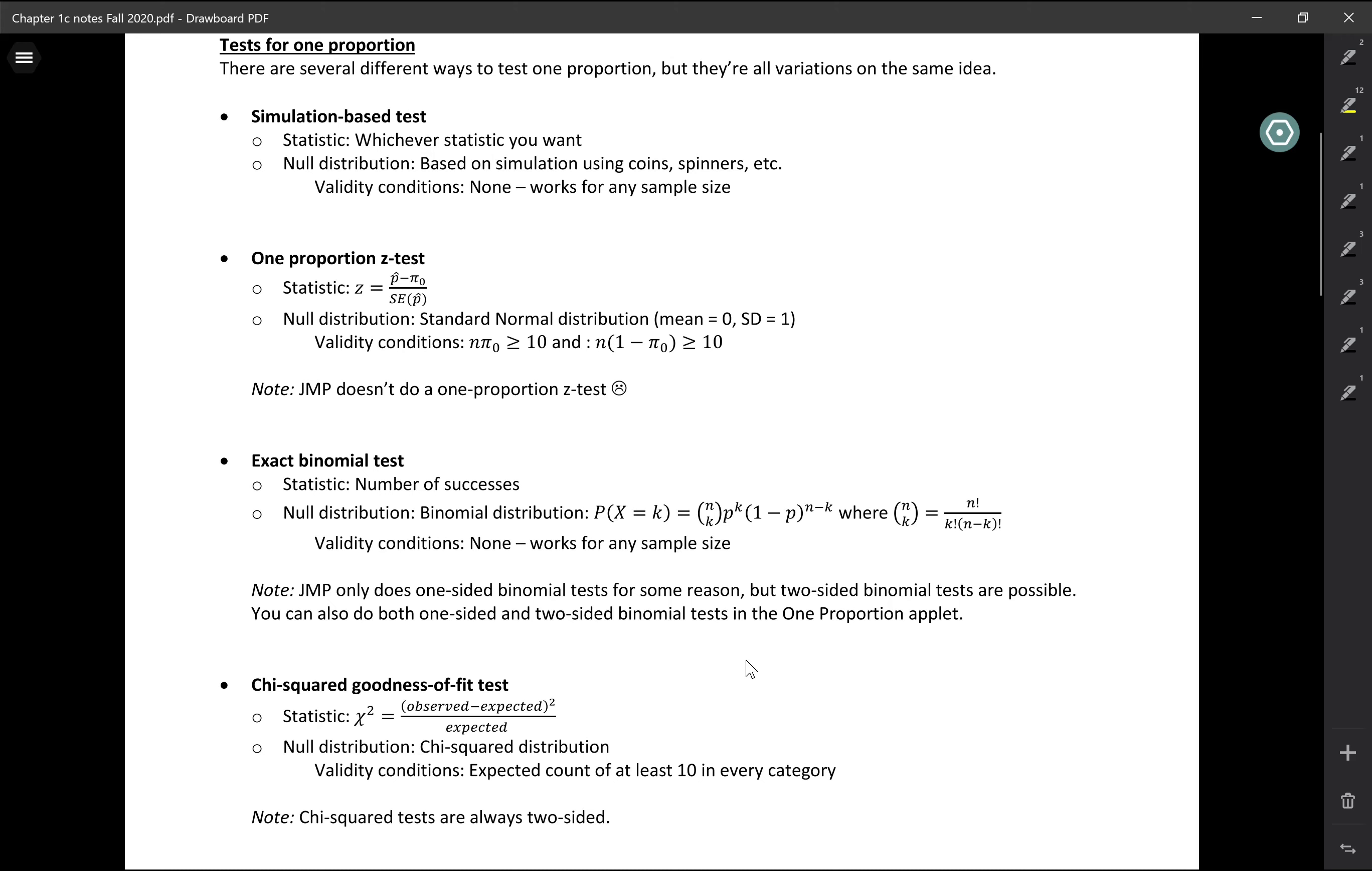And two of them are new, the exact binomial test and the chi-square goodness of fit test. These actually aren't included in your textbook, but I think that they're good to know, especially because these are the two tests that we're going to use when we use JUMP to analyze this type of data.